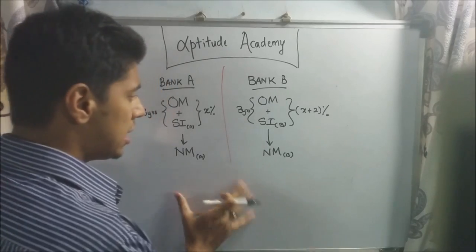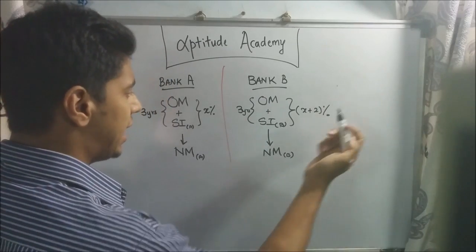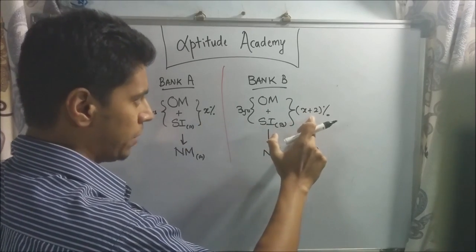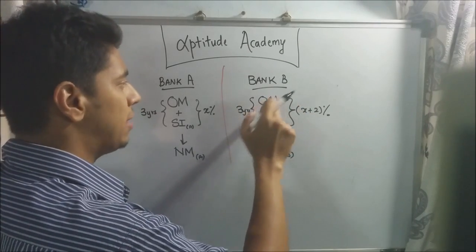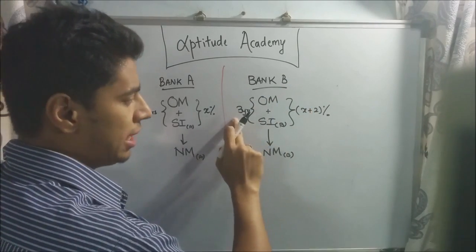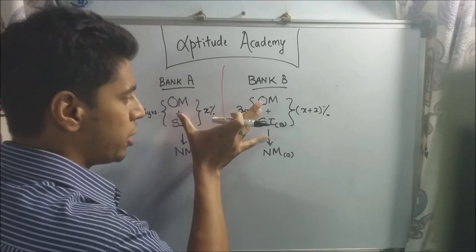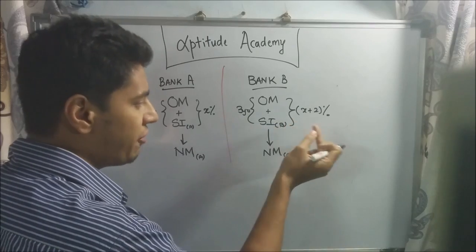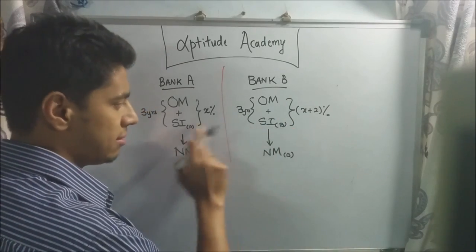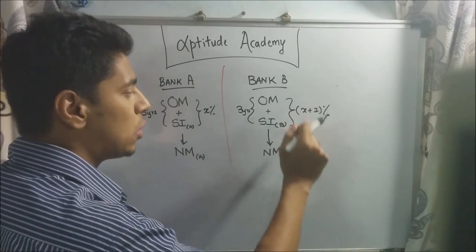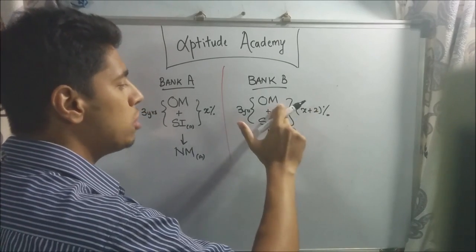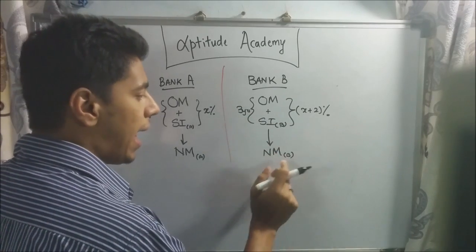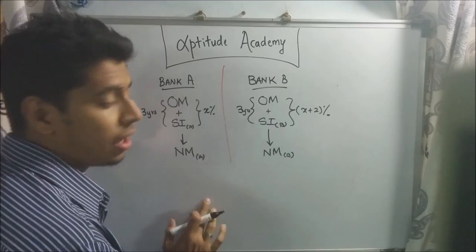Now, what the problem is saying is, suppose you had put it in a different bank that gave you an interest that is 2% more than this interest. So I've noted X plus 2% here. Let's just call it bank B. So you've put your old money now in bank B, for three years, same time, same money you've put in, but the rate of interest here is 2% more. So because this rate of interest is more, this simple interest will be more than this. And I've just noted it as SI of B. So now, your old money plus SI B will give you new money B. It's pretty obvious since the rate of interest is more, NM B will be more than NMA.